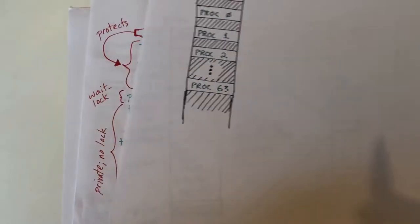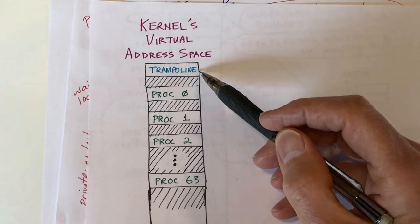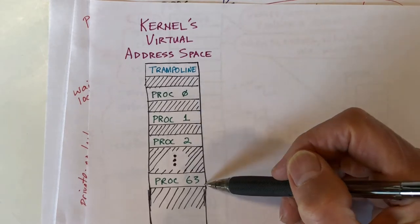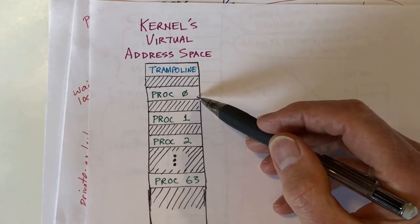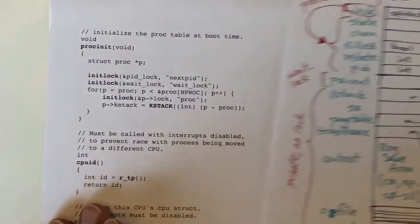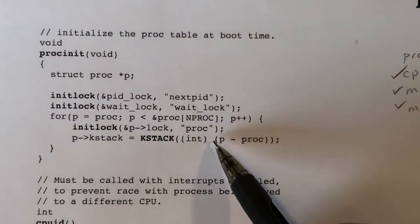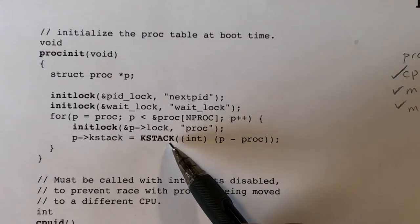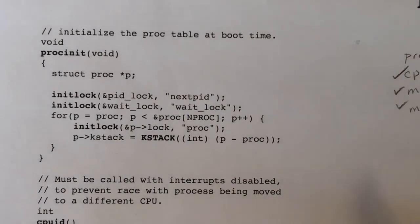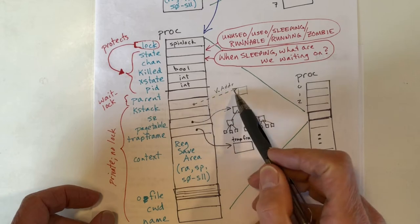At this point, I'll talk about what the virtual address space looks like for the kernel. The kernel's virtual address space, like all address spaces, will have a trampoline page mapped into the uppermost page. Then it has a series of guard pages and stack pages. For each of the 64 processes, there is one page of the virtual address space for the stack used when that process is running in kernel mode. In proc_init, a preprocessor macro function, given a number between zero and 63, determines the virtual address for that stack page and saves it in the kstack field of the proc structure.